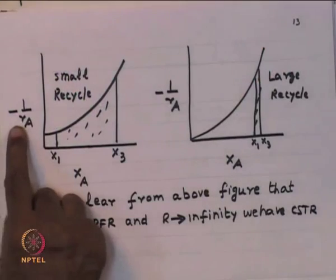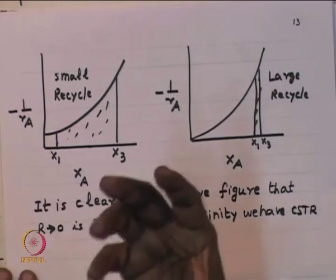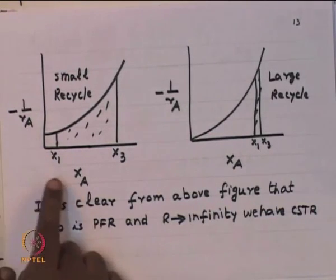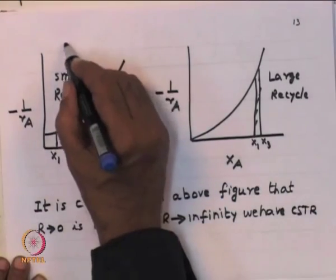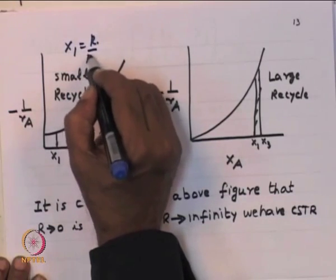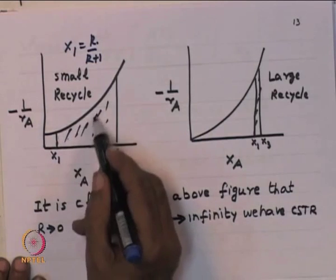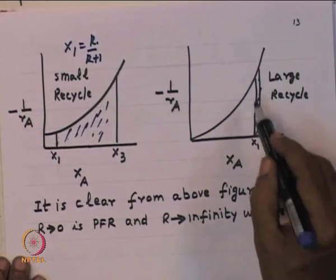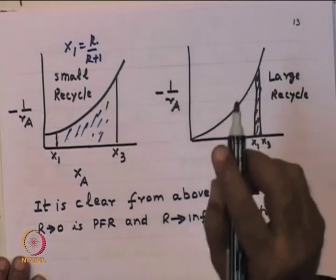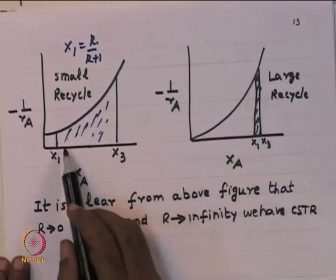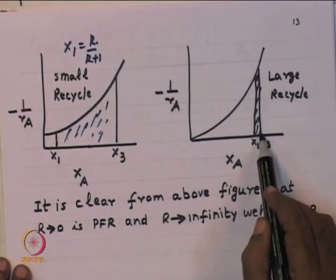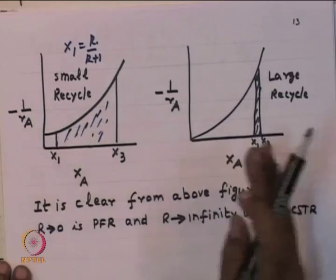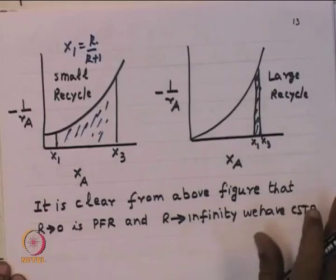When you plot 1/(−r_A) versus X — data that comes from experiments — when recycle is small, X_1 is small and you have a large area under the curve (PFR-like). When R is large, the area shrinks to a point (CSTR-like). Going from R = 0 to R = ∞, you obtain various properties between mixed flow and plug flow.